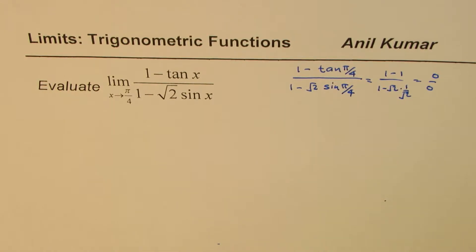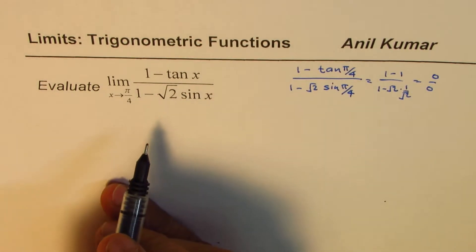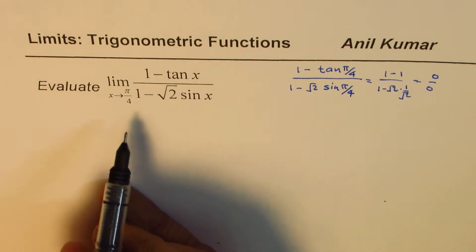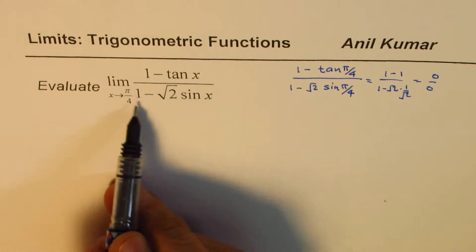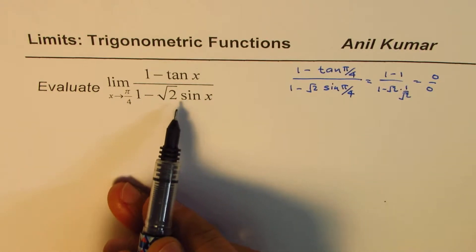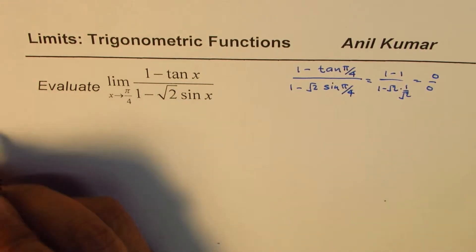Since it is 0 over 0, it's in indeterminate form. So we need to simplify these trigonometric expressions and then find the limit. One approach is to rationalize the denominator, so let's do that.